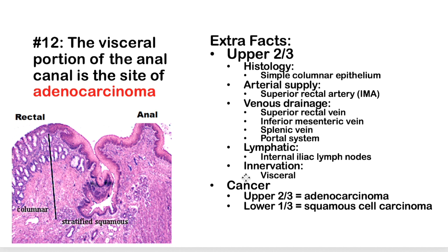In the upper two-thirds near the pectinate line, the cancer type is adenocarcinoma (simple columnar epithelium). In the lower one-third, it's squamous cell carcinoma, as the tissue there is stratified squamous epithelium.